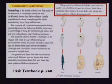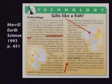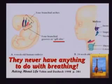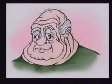Does the human embryo have gills like a fish? That's what the textbook says. This is a lie. Those are not gills. Those little folds of skin develop into bones in the ear and glands in the throat. They never have anything to do with breathing.